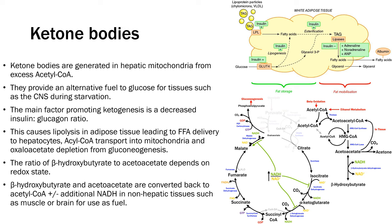Ketoacidosis is a pathological state occurring in absolute (e.g., type 1 diabetes) or relative insulin deficiency. SGLT2 inhibitors such as empagliflozin lower glucose by causing urinary glucose spillage — markedly increasing DKA risk because they lower blood glucose, creating a starvation-like state without the accompanying insulin signal. Any stressor increasing catecholamines, such as illness or surgery, could trigger ketoacidosis, often with a relatively normal blood glucose level.